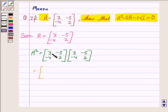Multiplying the two: 3 into 3 plus minus 5 into minus 4, and 3 into minus 5 plus minus 5 into 2.